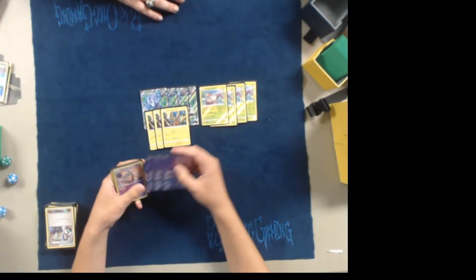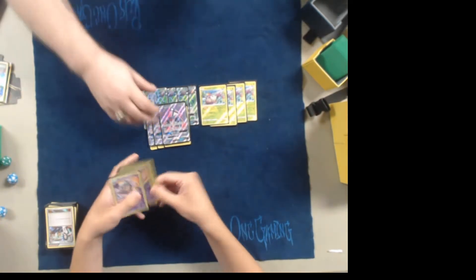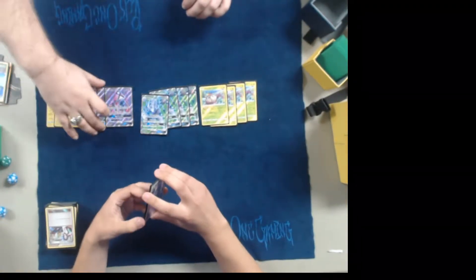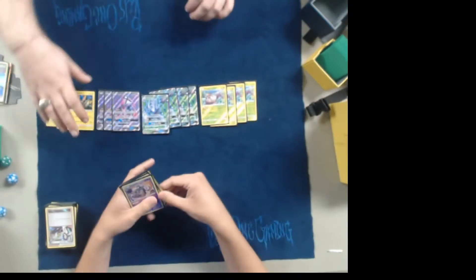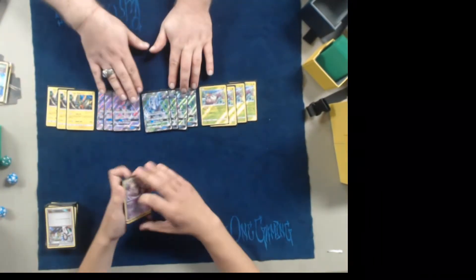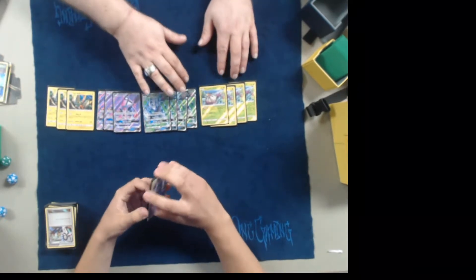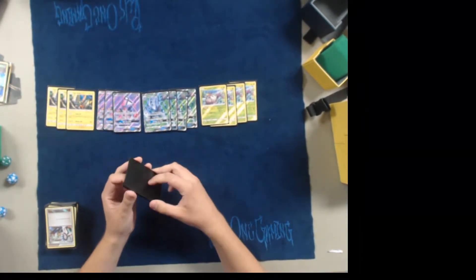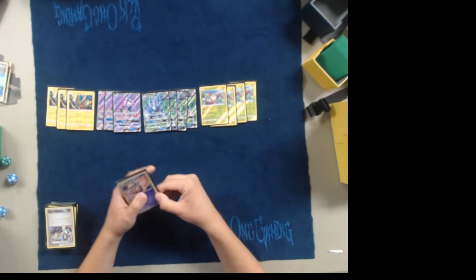Next, three Tapu Lele. Every deck's gotta play three Tapu Lele—you don't have to play three, you can play two, some may play zero. But Lele's just really good because it helps you search whatever Supporter you need: Brigette on turn one, a Guzma turn two or three, an Acerola—she kind of helps you get what you need when you need it.